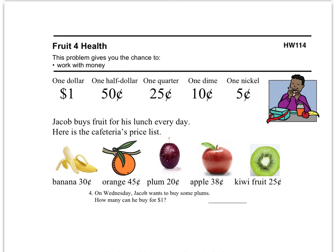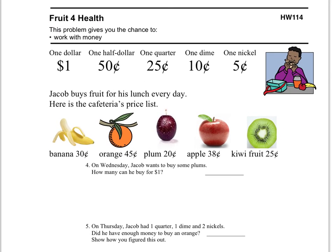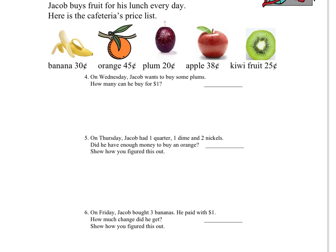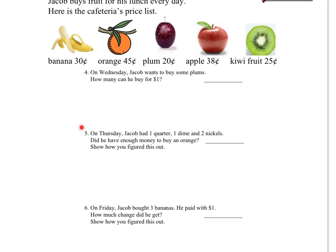Here we are on the backside. It's called Fruit for Health. Jacob buys fruit for his lunch every day. Here's the cafeteria's price list: banana 30 cents, orange 45 cents, plum 20 cents, apple 38 cents, kiwi fruit 25 cents. On Wednesday, Jacob wants to buy some plums — how many can he buy for a dollar? You have to figure out how many 20-cent plums you can buy with one dollar. Show your work and write your answer. Note: the questions should be numbered one, two, and three in order — sorry about that mix-up.